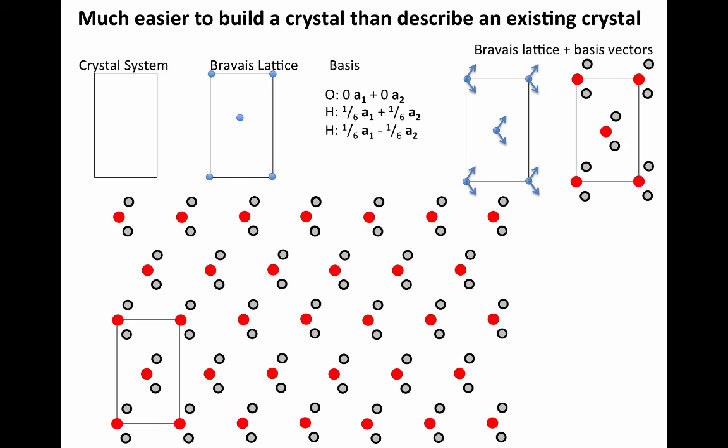I think broadly speaking, it's probably worth mentioning that it's a lot easier to build a crystal than to describe an existing crystal. So for example, if somebody tells you that you have a crystal system that looks like a rectangle, and they say, but it's a centered crystal.